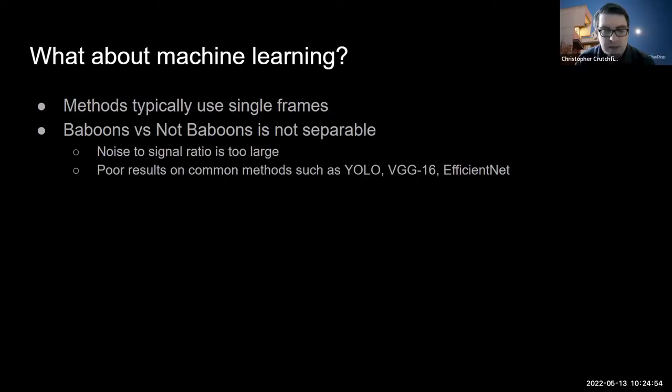A common question that comes up is can we just use machine learning instead of this motion method? Typically, machine learning methods look at a single image for detection. With this in mind, we plotted the most important features for the baboons and found that the clusters of baboons versus the clusters of not baboons were not separable because our signal to noise ratio was too large. This led to poor results with the algorithms we've tried, including YOLO, VGG16, and EfficientNets.